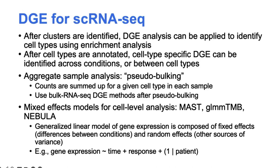Initially, DGE with single-cell data has been done by borrowing bulk RNA-seq methods and applying them directly to aggregated counts from multiple cells of the same type — an approach called pseudo-bulking. This allows us to apply the same algorithms and packages used for bulk RNA-seq to single-cell data. More recently, single-cell specific methods have emerged, many using mixed-effect modeling to estimate fixed effects for conditions of interest and a random effect component to account for other sources of variance. This is still a relatively new area and methodology currently under development.